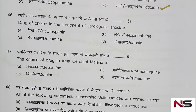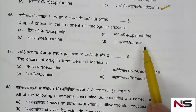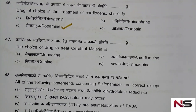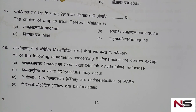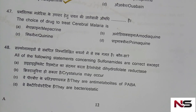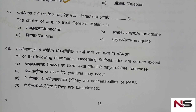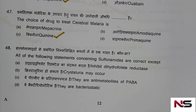Question 46: Drug of choice in cardiogenic shock. Options are: digoxin, epinephrine, dopamine, dobutamine. The correct answer is option C — dopamine. Question 47: Drug of choice to treat cerebral malaria. Options are: mefloquine, amodiaquine, quinine, primaquine. The correct answer is quinine.